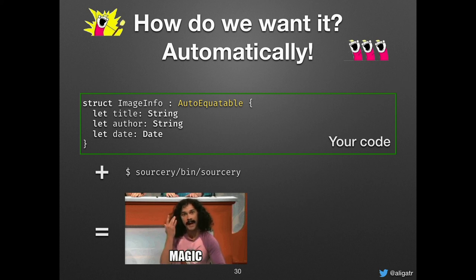To be fair, the real template for AutoEquatable is a little bit more complicated, because you have to handle optionals, arrays, and stuff like that. You can actually find the full template for AutoEquatable on Sorcery's GitHub repo — they have a few example templates you can use. But you see the idea: it's not that complicated to do exactly what you want, and once you have the template written you can put it in all your projects and have everything for free.